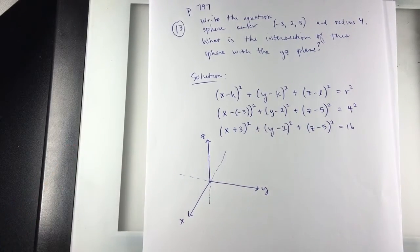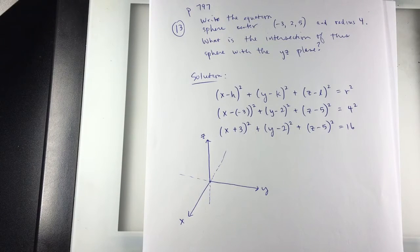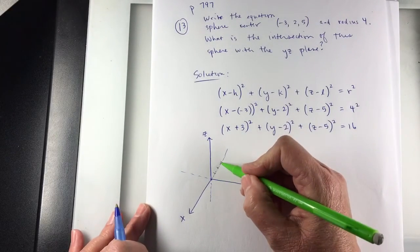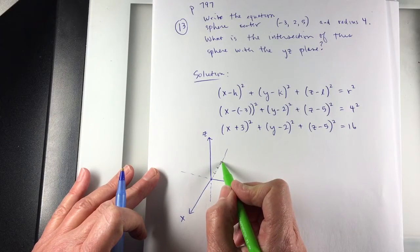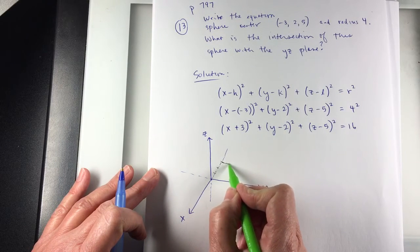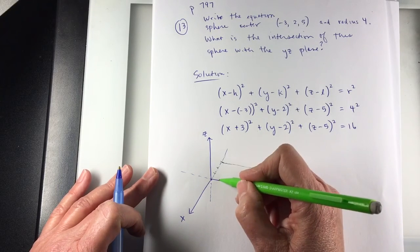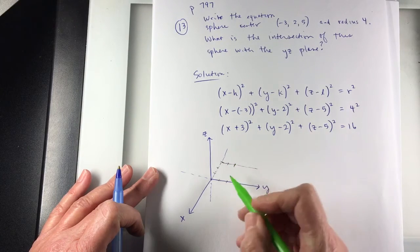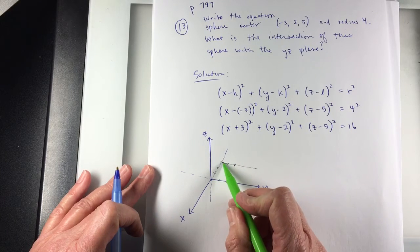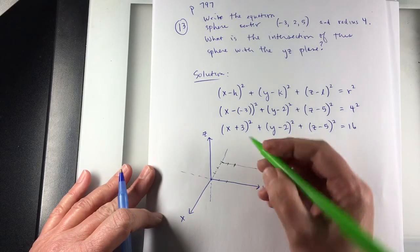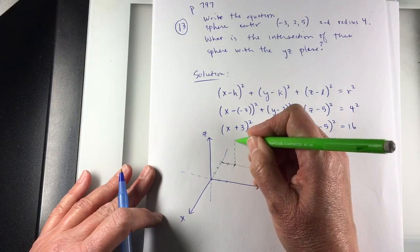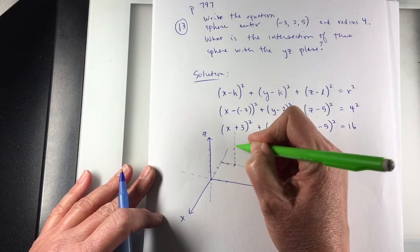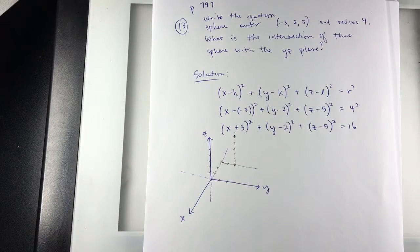So the point (-3, 2, 5): I'll go backwards on x, 3 units. Then I need to go 2 on y. I'm going to put a line parallel to the y-axis, and mark the same spacing. So I went back 3, to the right 2, now up 5, parallel to z. Here's the center of the sphere.